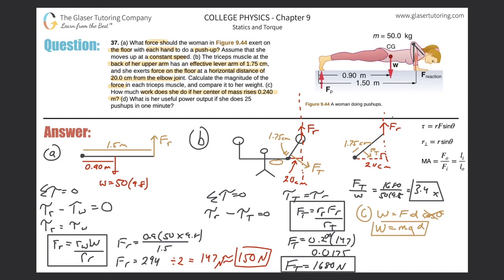Work equals mass times gravity times distance: 50 times 9.8 times 0.24 equals 118 Joules. That's the work done per push-up in raising her center of mass against gravity.